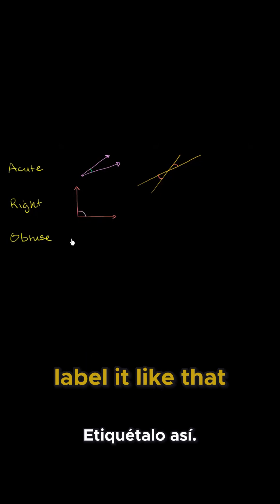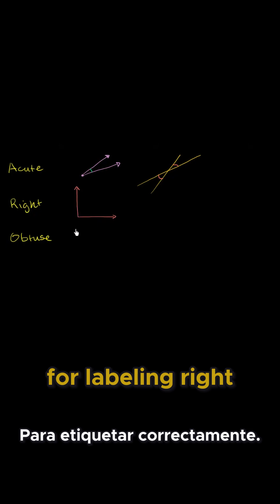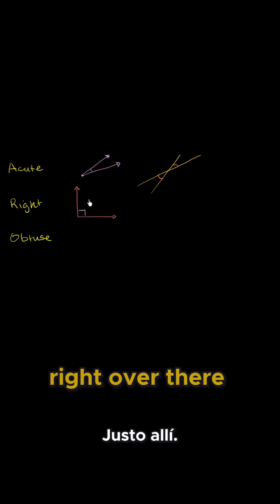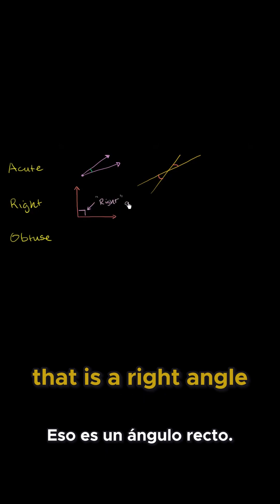And I could label it like that, as a traditional angle, but the general convention for labeling right angles is to put a little kind of a half of a box right over there, and that tells me that that is a right angle.